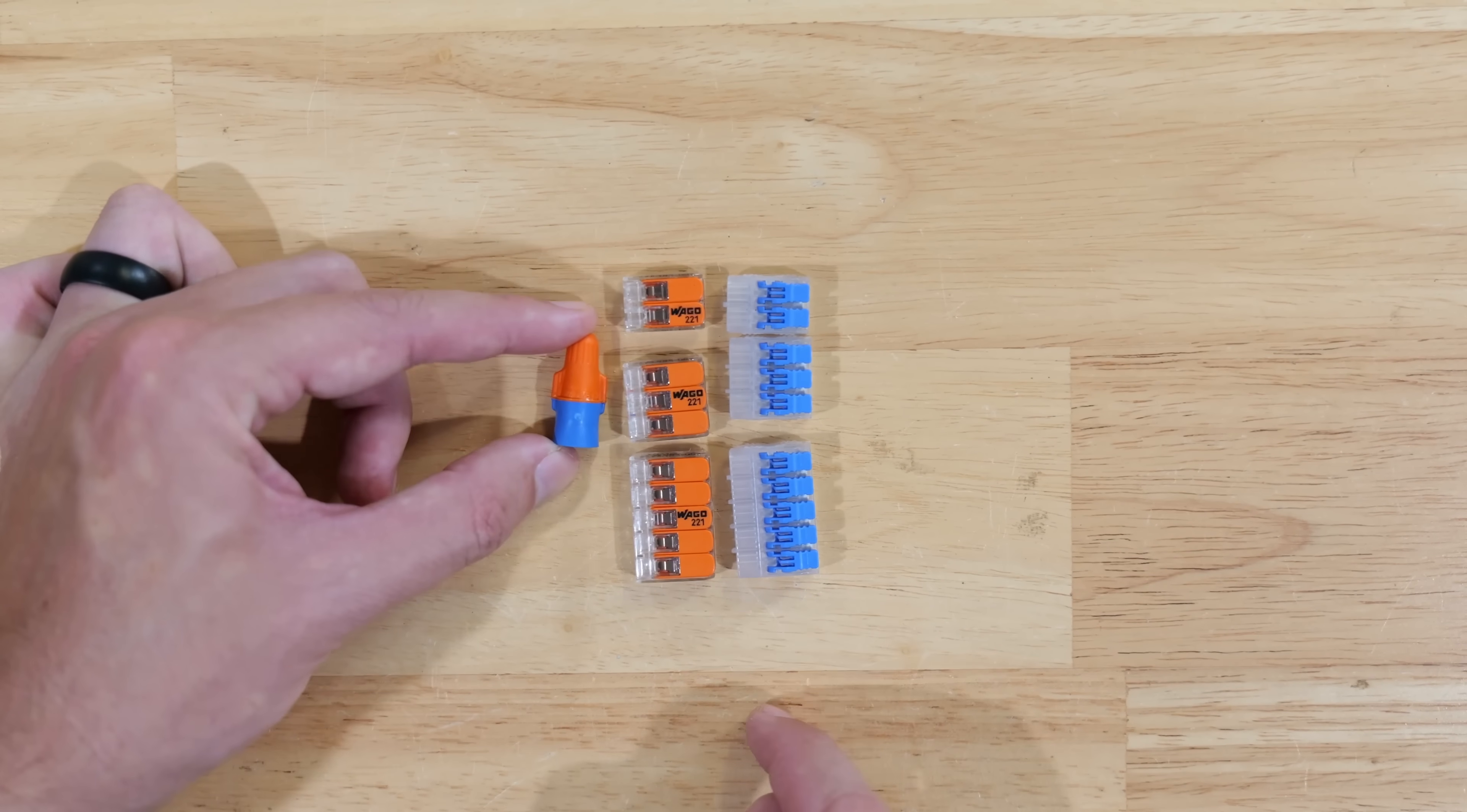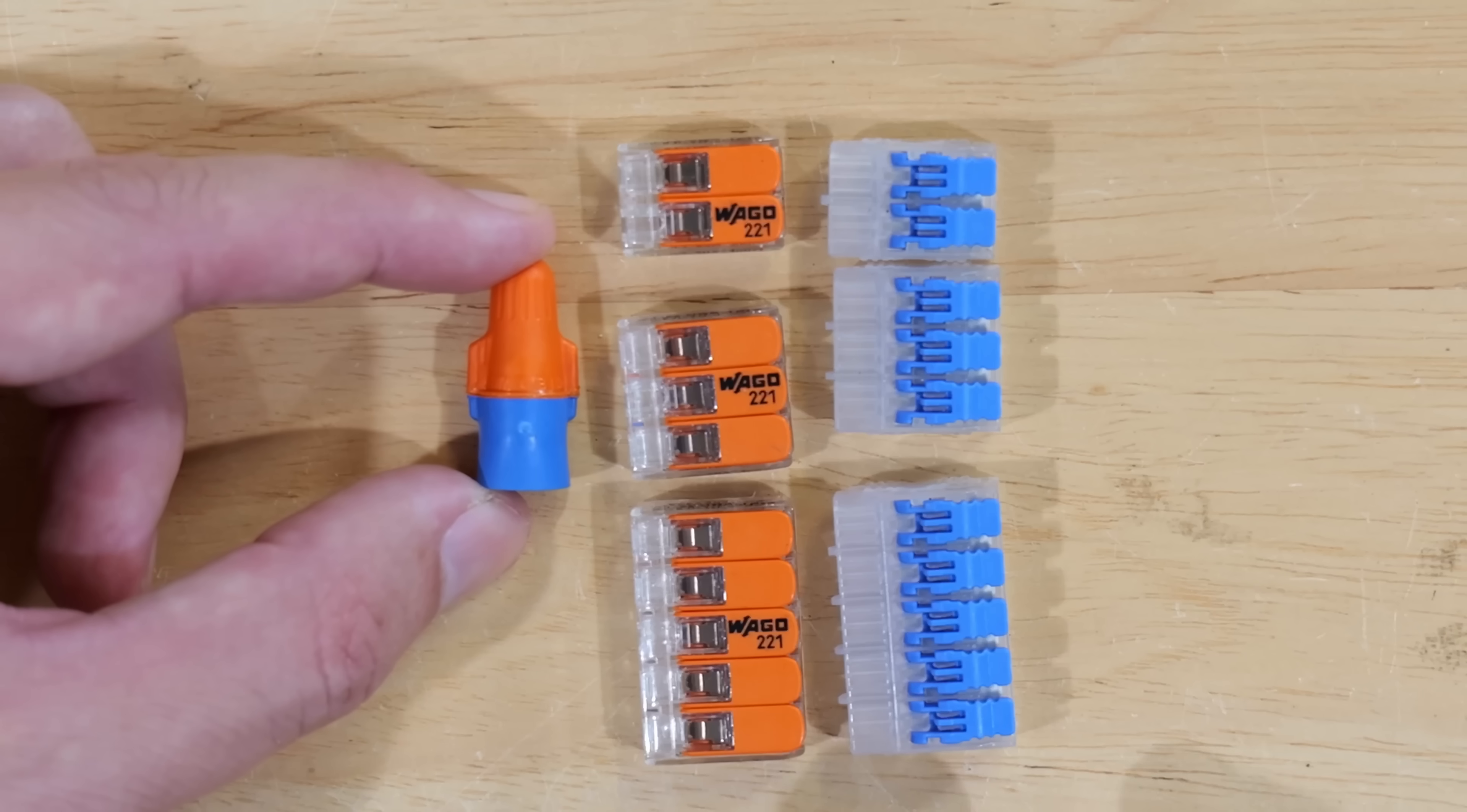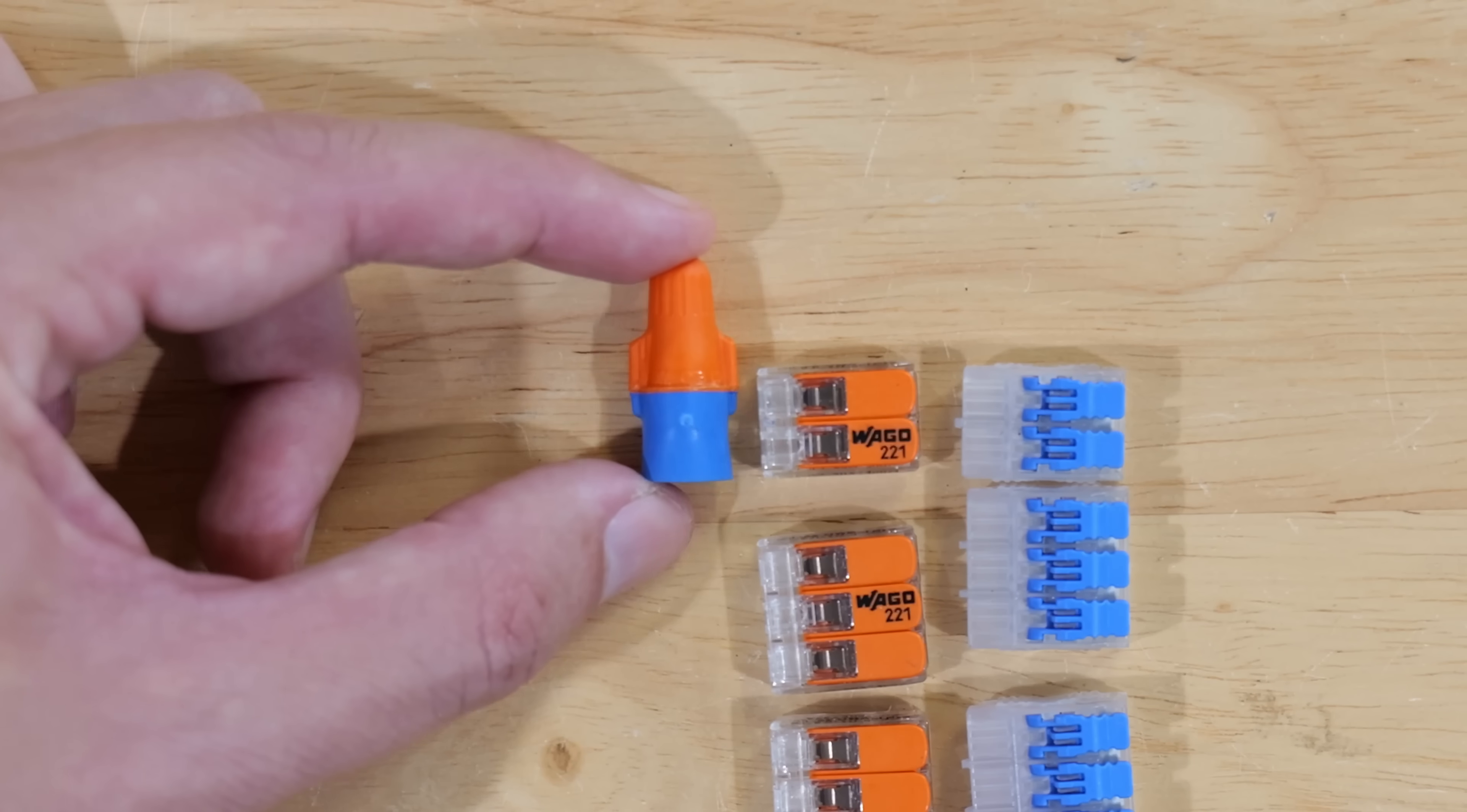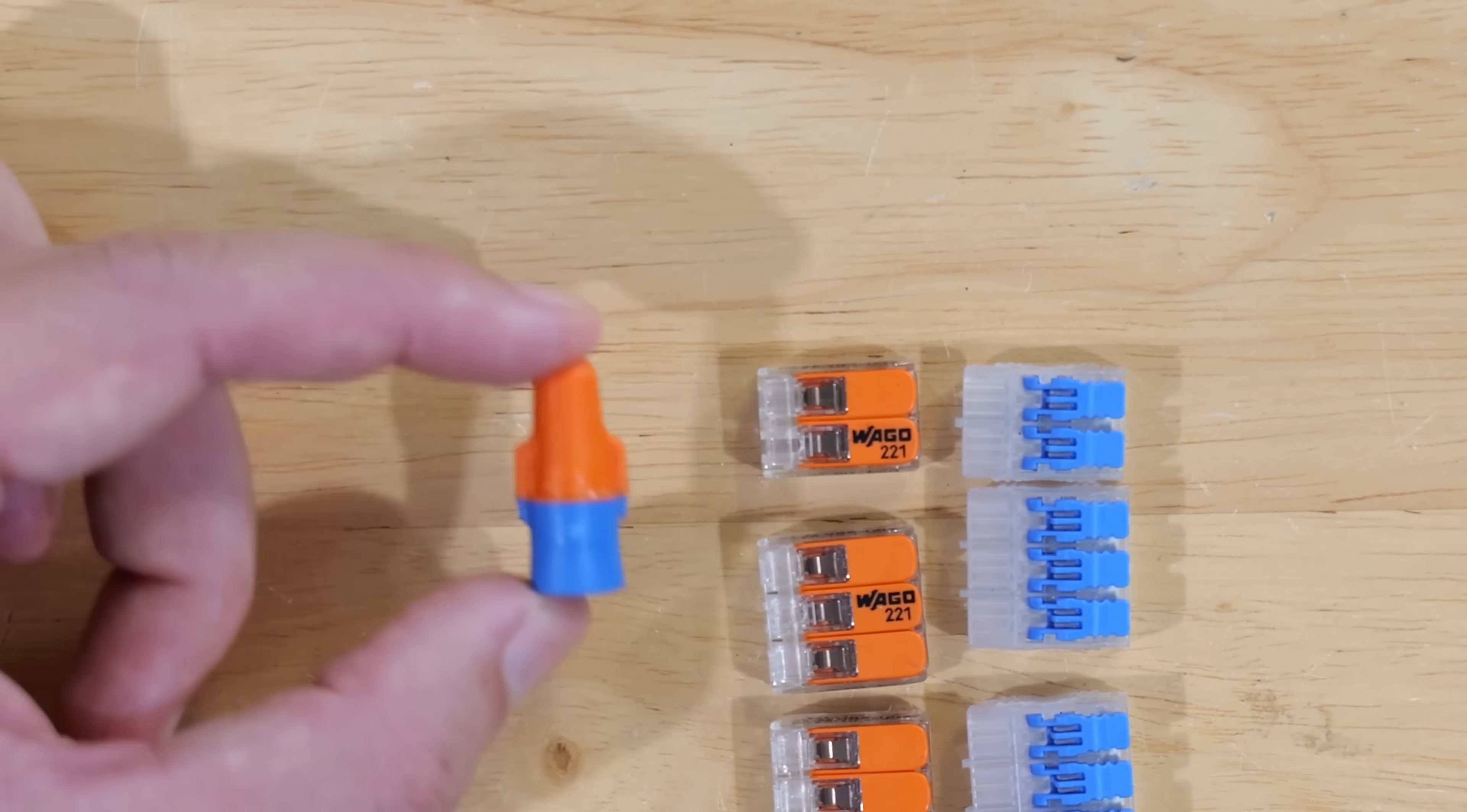If I put these up next to the three ports, you can see we start to make up ground. At those points, if you have less wires in the box, then it might either be a wash as far as how much room it takes up in the box. And especially if we get to the two port connectors, they're definitely going to take up less room.